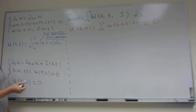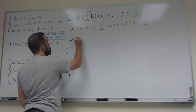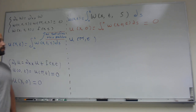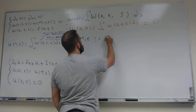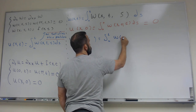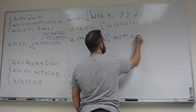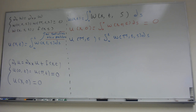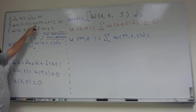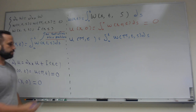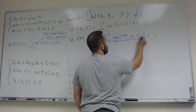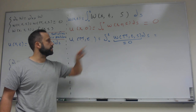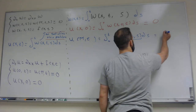Now for the boundary conditions. I'll verify the u(π,t) boundary condition, and you'll see it's similar for u(0,t). So u(π,t) is equal to the integral from 0 to t of w(π,t,s) ds. Now we're going to use what we know about w — we know that w(π,t,s) = 0. So now this function is equal to zero; we're integrating the zero function from 0 to t, and whenever you integrate zero, you get zero.